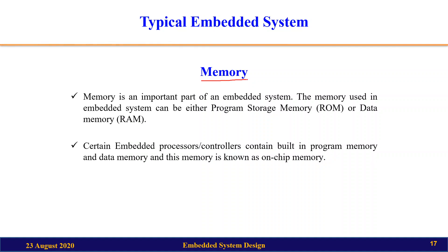Memory is an important part of the embedded system because for any data storage or program storage we require memory. All embedded systems or embedded system process controllers may not contain built-in memory, so in that case we need memory placed externally on the embedded system. Generally there are two types of memories: program storage memory, also called ROM, and data memory, also called RAM.